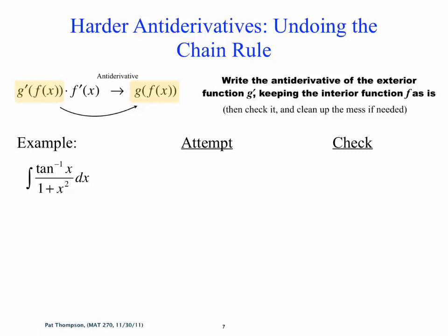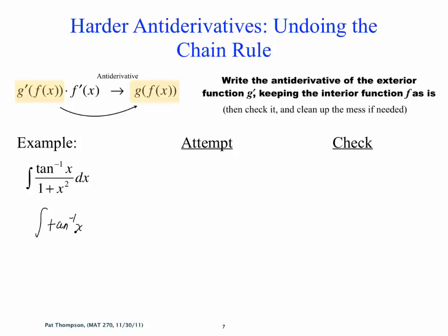This one's a little interesting — you kind of have to have some problem solving skills here. We got arctangent. Rather than do 1 plus x squared to the negative 1, do you recognize what's going on with this 1 plus x squared in the denominator? That's the derivative of arctangent.